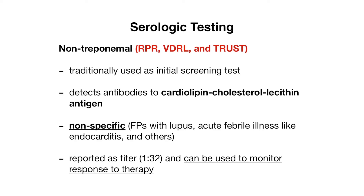These tests actually detect antibodies to cardiolipin, cholesterol, and lecithin antigen. And because of this, it's actually a non-specific test and so there can be false positives. We can see false positives mainly in situations like lupus as well as acute febrile illnesses like endocarditis. There are some other situations but these are the main ones that are often tested.